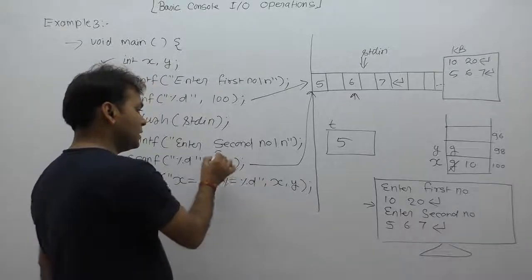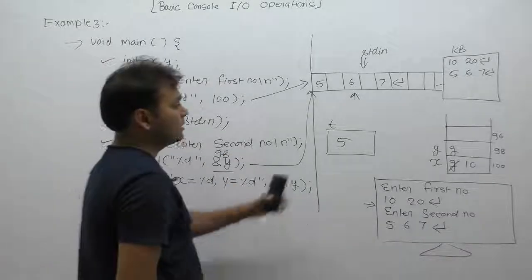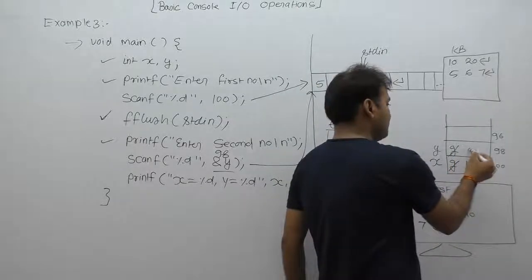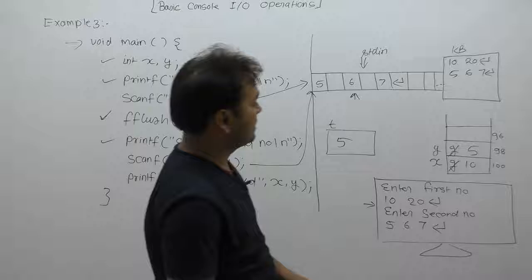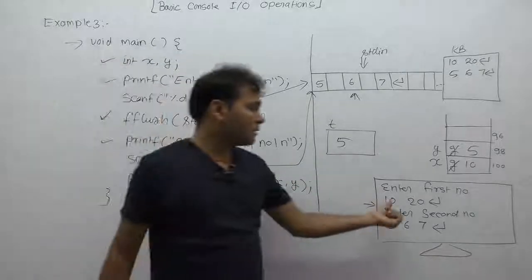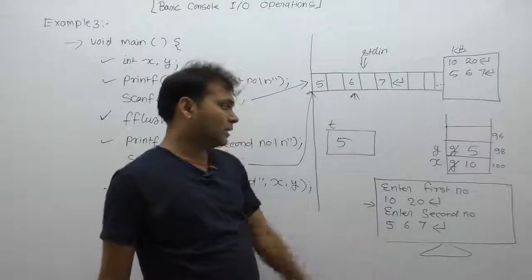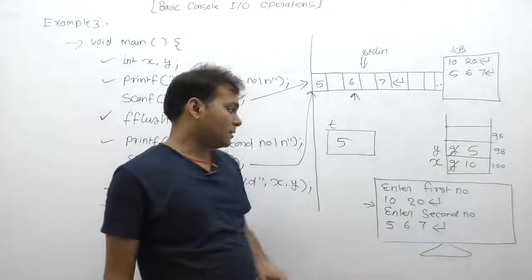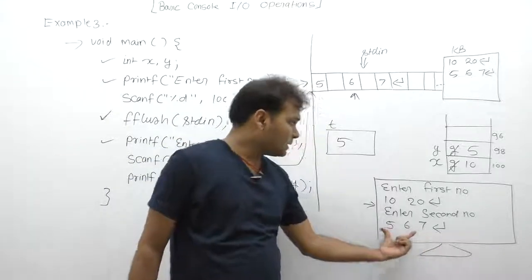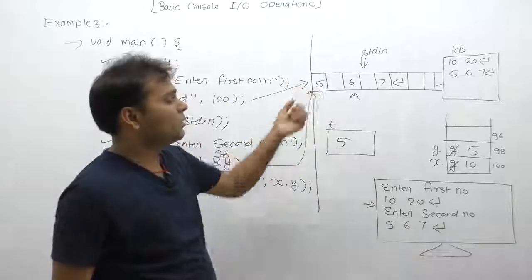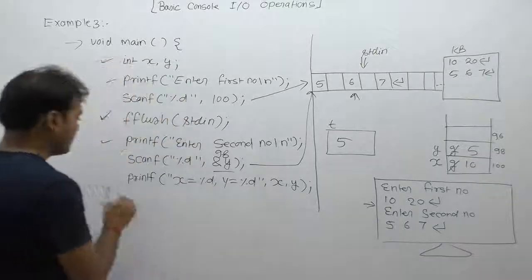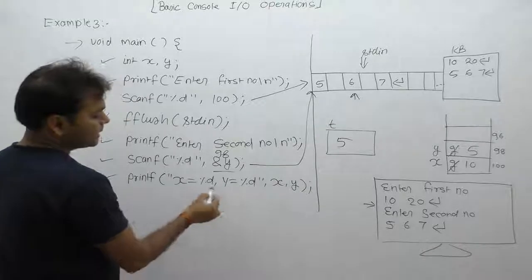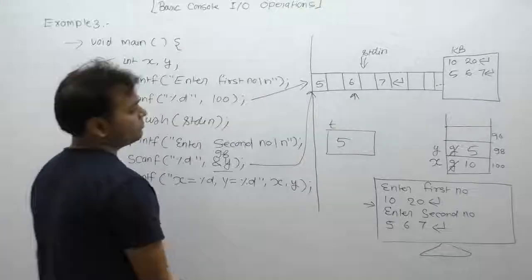Next time, pass the address of y, which is 98. Now this input character will be assigned in place of variable or in place of address 98. First time, for this case, 10, 20 was entered, but only 10 was read, then 20 was flushed using fflush function. Next, fresh data was entered: 5, 6, 7, but only 5 was read. Then this scanf finishes. Then printf will display: x equals to value of x, y equals to 5.